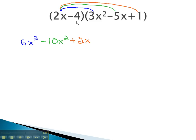Now, we can distribute the negative 4 through the other polynomial. Negative 4 times 3x squared is negative 12x squared. Negative 4 times negative 5x is positive 20x. Finally, negative 4 times positive 1 is negative 4.